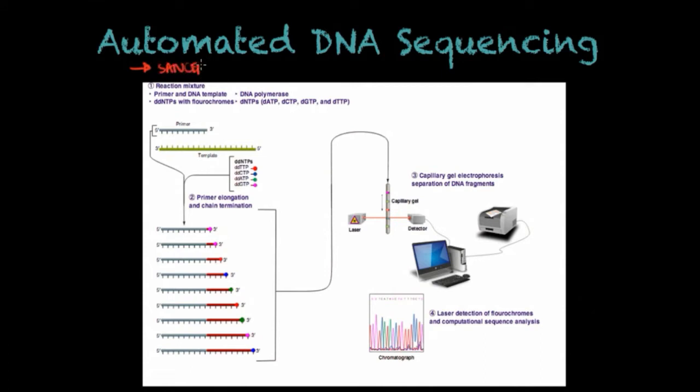It's based on the principles of the Sanger method because it uses everything, including, and most importantly, the DDNTPs or the chain termination nucleotides, to produce fragments that can then be separated by size in gel electrophoresis.